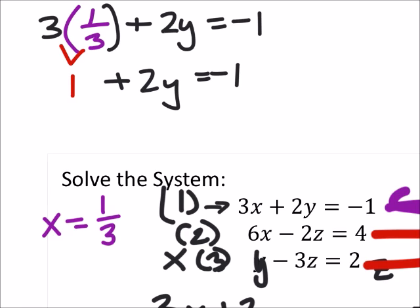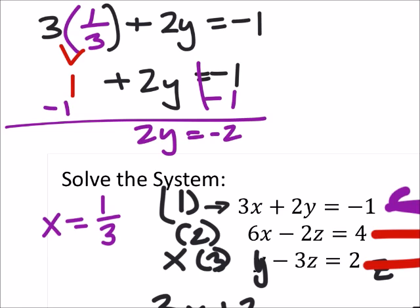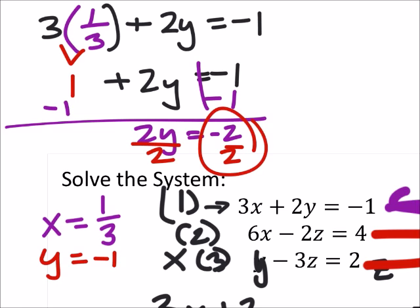And I set up plus two Y equals negative one. So to solve this problem, I would subtract one from both sides. And I would do two Y equals negative two. And dividing both sides by two, we find that Y equals negative one. So I just divided those two.